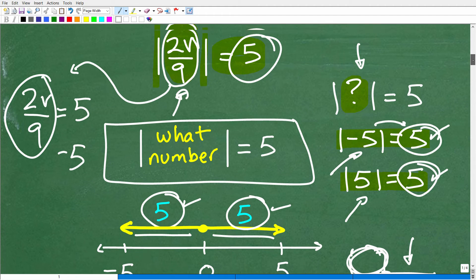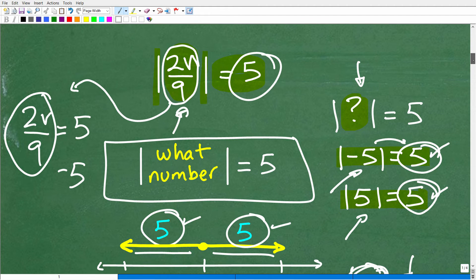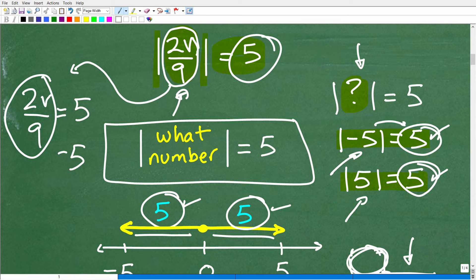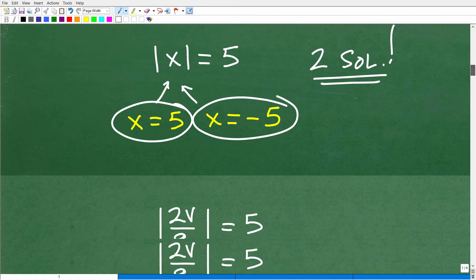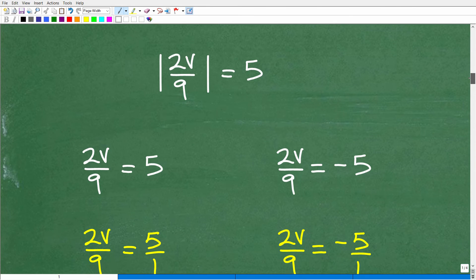Going back over here to this equation, what you want to do is just use your common sense. Be like, whatever is inside the absolute value equation must be equal to this number or the negative of it. That is the exact steps you need to take when you're solving an absolute value equation. This is absolute value, this is equation. 2v over 9 must be equal to 5 or negative 5. That's the only way we can get this as an answer.